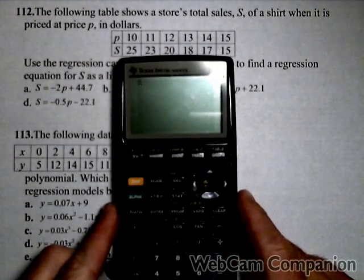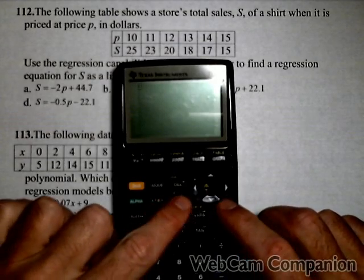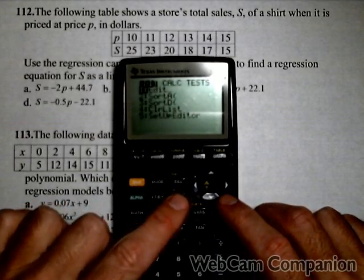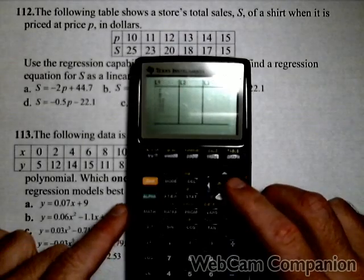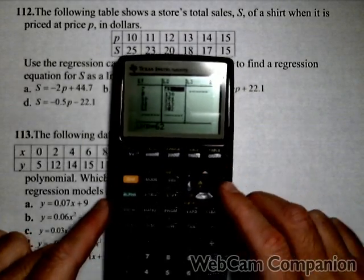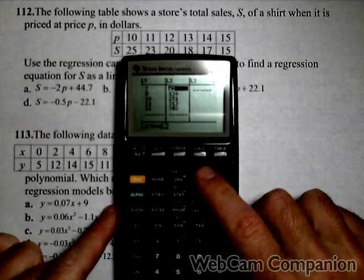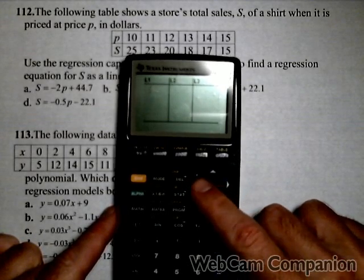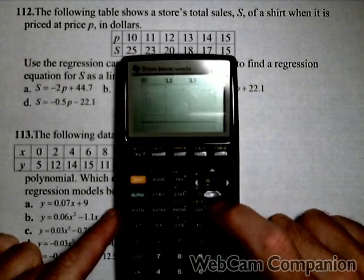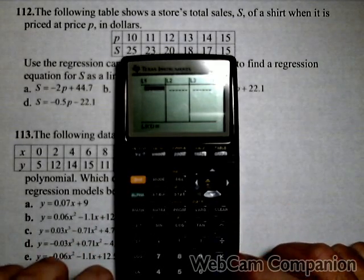We'll go through that. It's all going to be under the stat menu. I'm going to edit my list. I'm going to put these in at L1 and L2. I'm going to clear out what I already have in there. Hit clear, not delete. Now I'm going to enter my list.